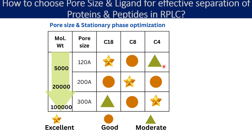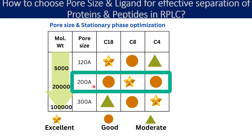For a compound with a larger molecular size of around 20,000 daltons, you should select a column with a pore size of around 200 angstrom. If you select C18 as the ligand, you can expect good efficiency, good retention time, and good separation. If you select the C8 stationary phase, you can expect excellent efficiency, excellent retention time, and excellent separation. With the shorter carbon chain C4, you can still expect good efficiency, good retention time, and good separation.